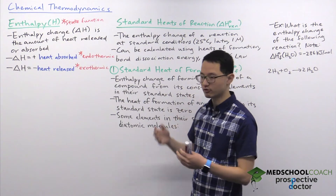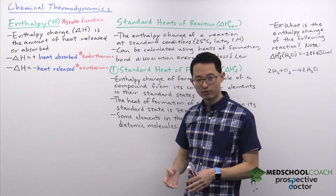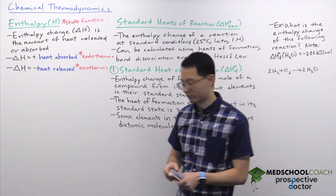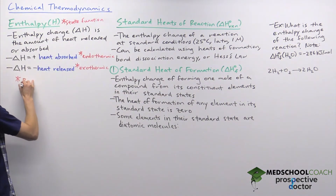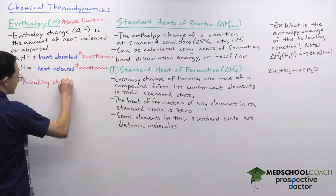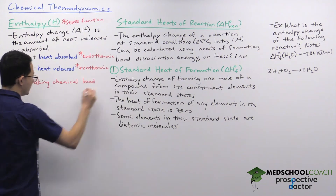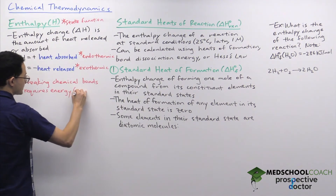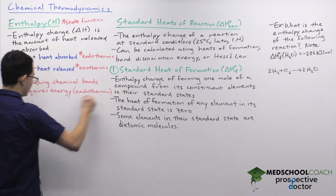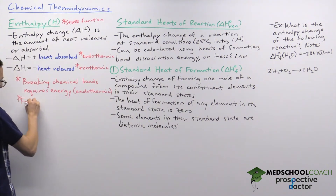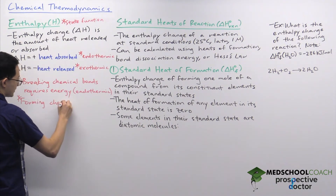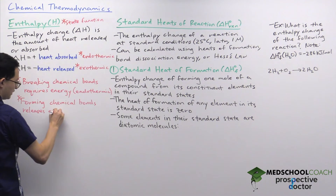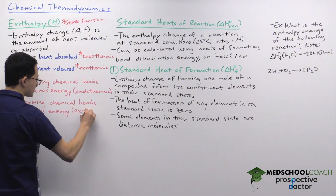Since we're looking at chemical reactions, we're looking at breaking and forming chemical bonds. It's important to know the energy change involved. Breaking chemical bonds requires energy — that means breaking bonds is an endothermic process. Conversely, forming chemical bonds releases energy, meaning the formation of chemical bonds is an exothermic process.